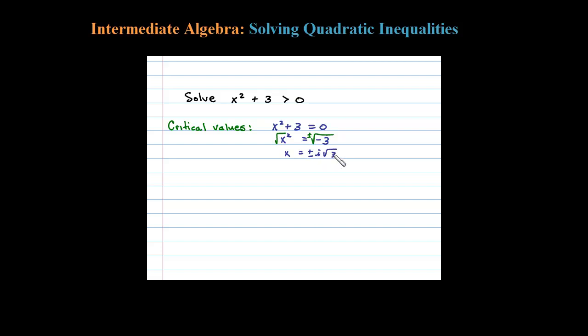i√3. Notice that's imaginary. When you get imaginary critical values like that, that just means there's no real critical values. So there's no critical values for this. The second step is to make a sign